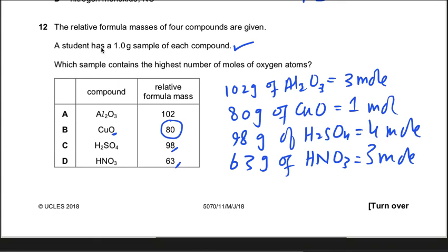He's asking: a student has 1 gram sample of each compound. Which sample contains the highest number of moles of oxygen atoms? If 63 grams of nitric acid has 3 moles of oxygen atoms, so how many moles of oxygen atoms would be present in 1 gram? So after calculation...